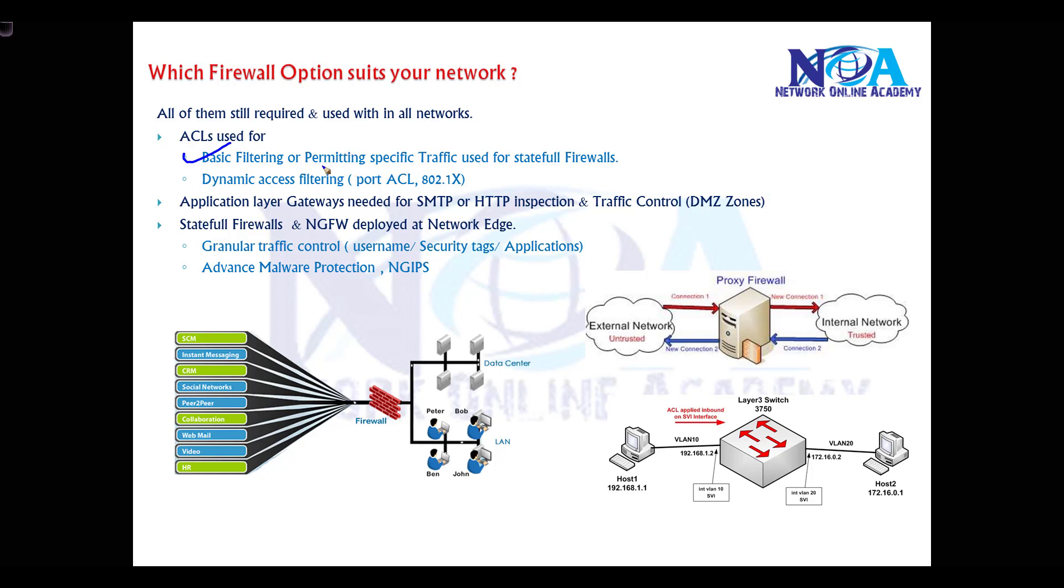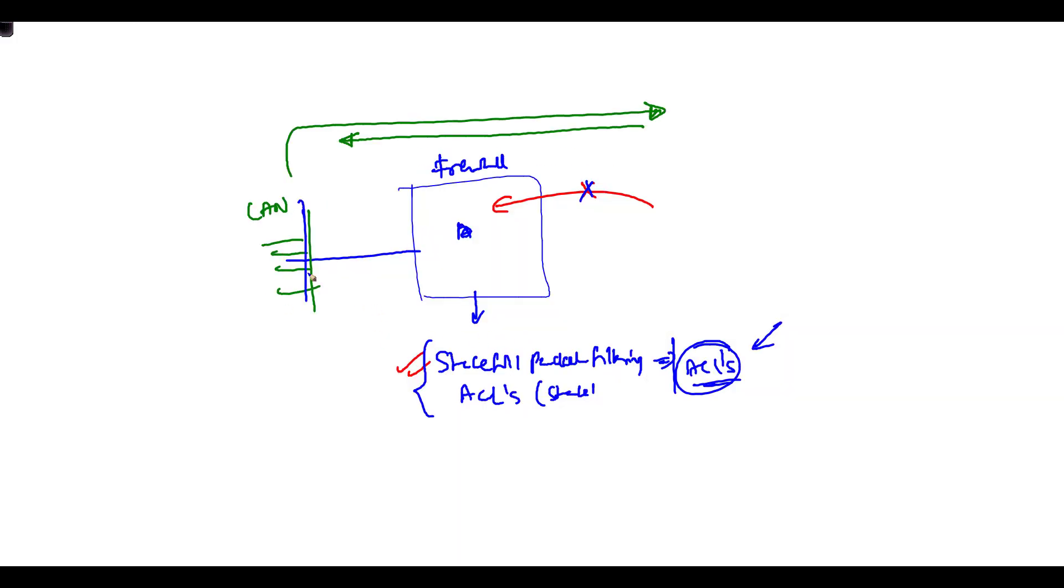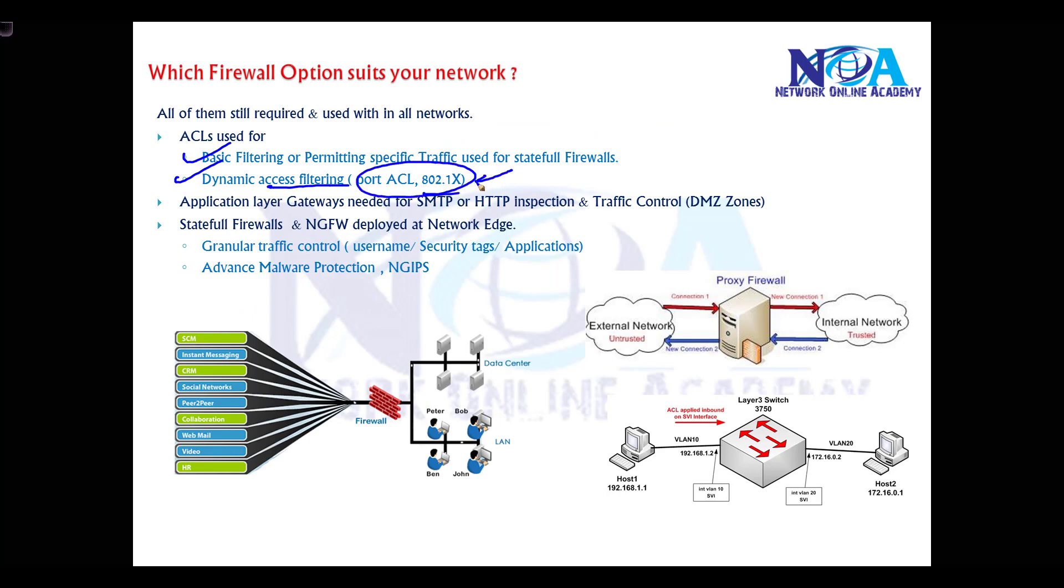Almost all firewalls support basic filtering for specific traffic to be permitted. We may also use access filtering like ACLs at layer 2. Within the LAN, when a user connects to the network and before he accesses the network, we can allow the user to download some ACLs specifically, like downloadable ACLs. This is related to 802.1x, which we'll talk about in the network access section.